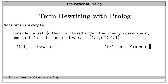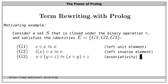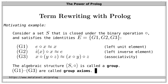Second, every element X has a left inverse element, denoted by I of X. I of X is the inverse element because I of X circle X is equal to the unit element. So G2 states that every element has a left inverse element, and G3 states that the operation circle is associative. A set S together with an operation that satisfies these identities is called a group, and these identities are called group axioms.